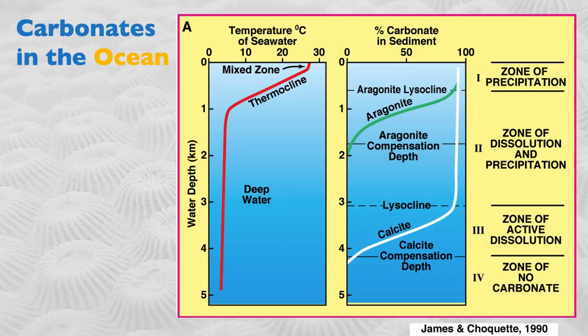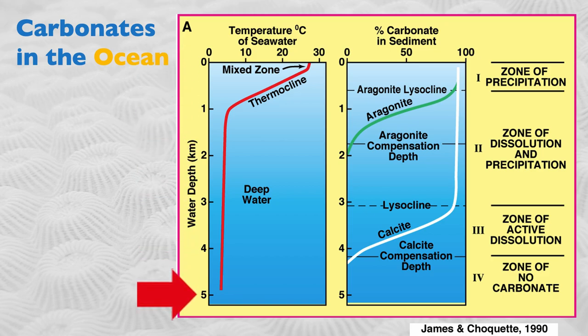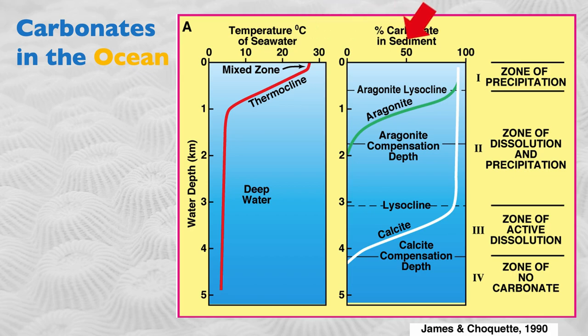Dolomites are very important in terms of rock volume and reservoir properties. Now that we know what minerals we can expect in the ocean, let's talk about the preservation and formation of different minerals. This is very relevant for understanding the biology and the diagenesis or chemistry of carbonate. On this slide I'm showing you a vertical graph of the ocean from zero to 5,000 meters below the surface. On the left is a temperature zone, in the middle is the percentage of carbonate in the sediments, and on the right the different diagenetic zones.